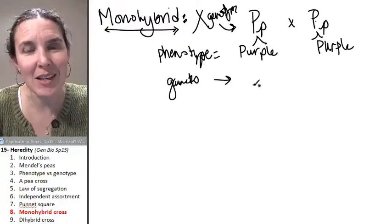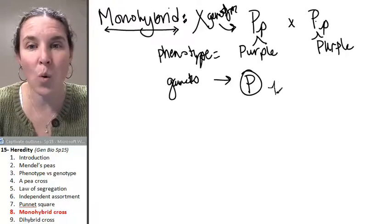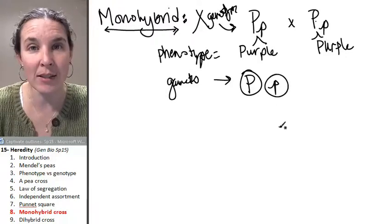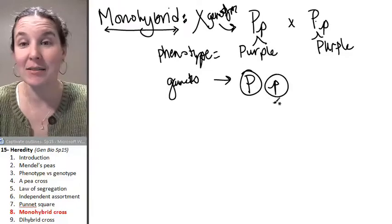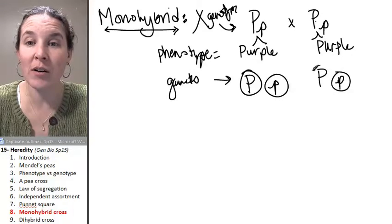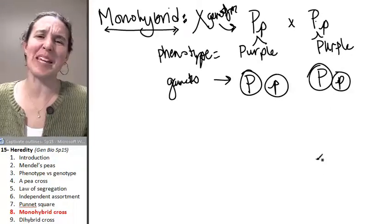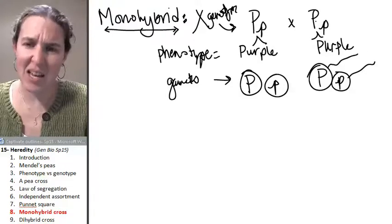So my possible gametes, remember my gametes are always haploid. There's only one allele in each gamete. And these are my possible gametes done. What are my possible gametes for old boy over here? Done. I circle my gametes because I like to remember that, you know what, these are gametes.